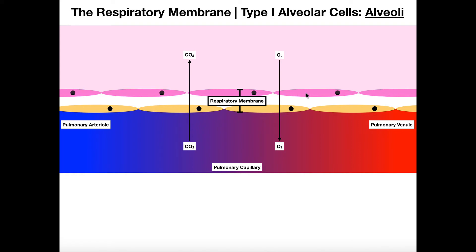Type 1 alveolar cells were simple squamous epithelial cells, and being simple squamous epithelial cells, they're perfect for gas exchange because they're very thin. You have a very low distance for gases to diffuse when you have a simple squamous cell making up the lining of the alveolus.